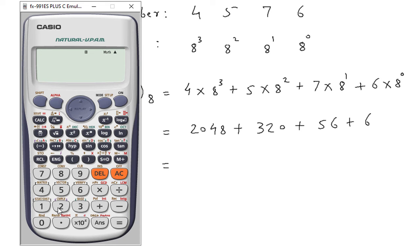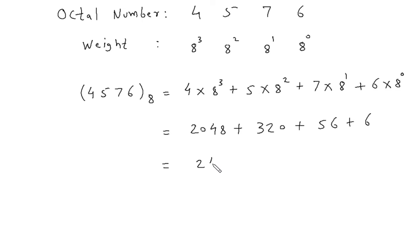Now this will be 2048 plus 320 plus 56 plus 6, so it is 2430. This is in decimal, so its base will be 10. Therefore 4576 octal number is equal to 2430 decimal.